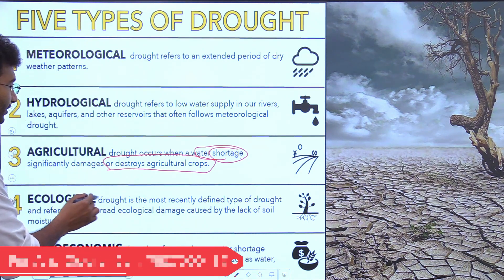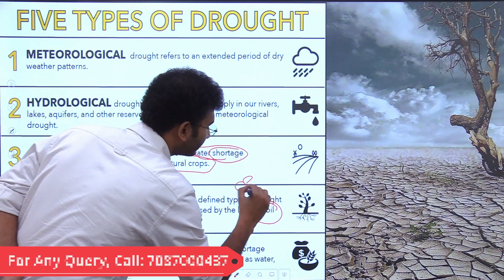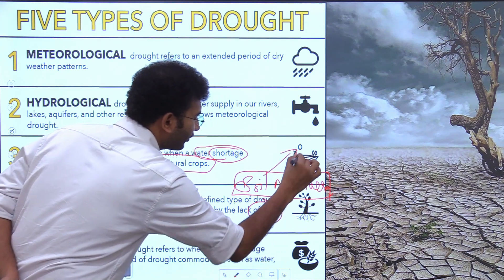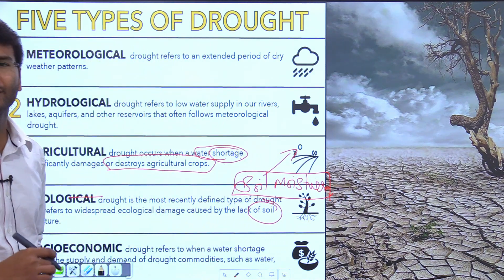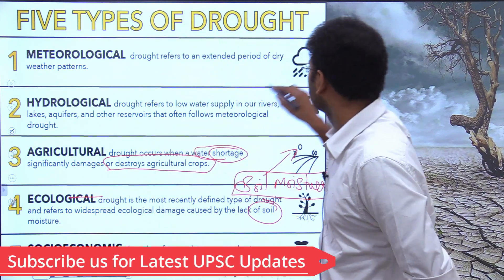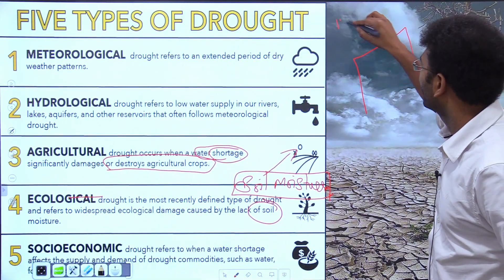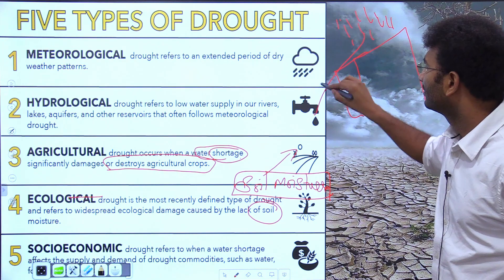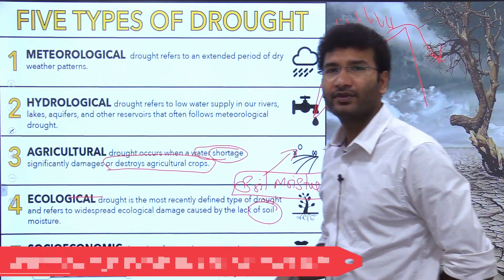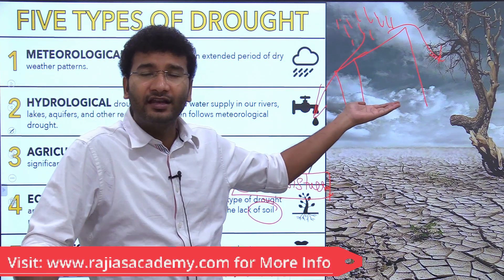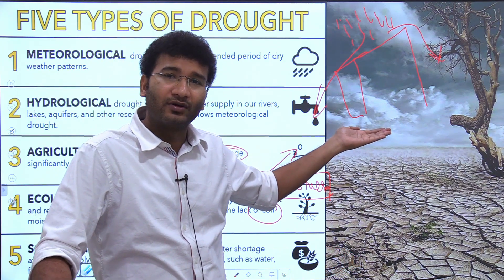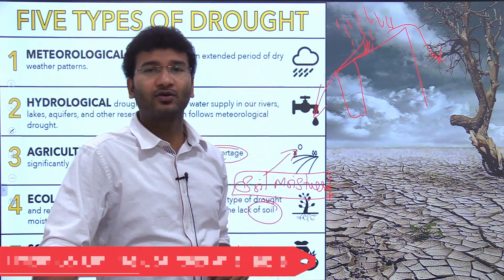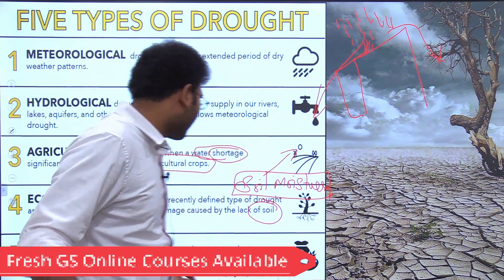Ecological drought is associated with soil moisture. For example, if there is hard rock, no matter how much rainfall it receives, the water will simply flood and flush off — the soil cannot retain any moisture. In this condition, vegetation is not productive and this condition is also called drought.